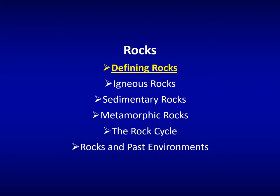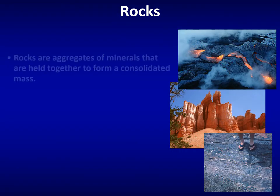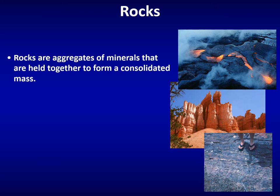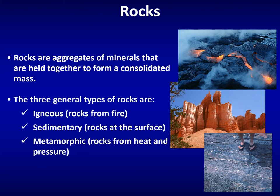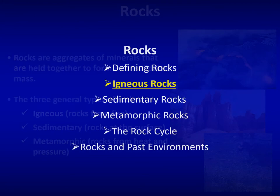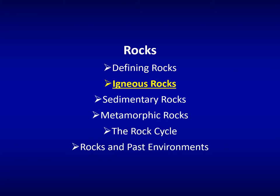The definition of a rock is an aggregate of minerals — a bunch of minerals held together to form a consolidated mass. There are three ways minerals group to form rocks: through cooling from a melt (igneous rocks, from the Latin word for fire), at the Earth's surface (sedimentary rocks), and through heat and pressure from plate tectonics (metamorphic rocks).